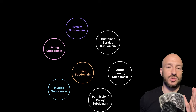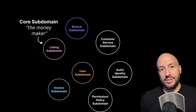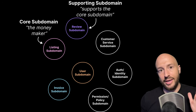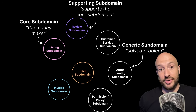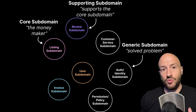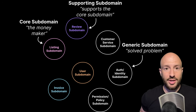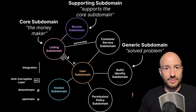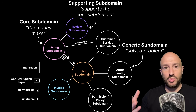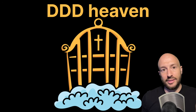Each subdomain falls into the category of either a core subdomain, a supporting subdomain, or a generic subdomain. Of course, these subdomains have relationships with one another, which is why we would introduce a context map in which we describe the relationships they have with one another.